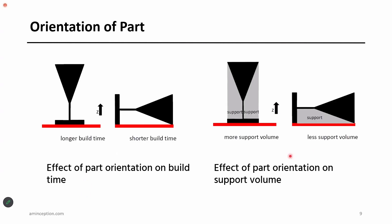Let's see how the orientation of a part influences the quality of the part built. If this is the part you are planning to print and the red one is the build plate, there are several possible orientations. If you don't select the appropriate orientation, you will end up with a bad print, or it may cost more, or you may have to do extensive post-processing to remove the support structures.